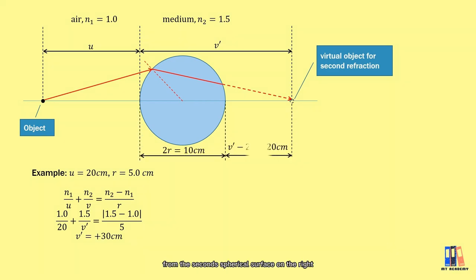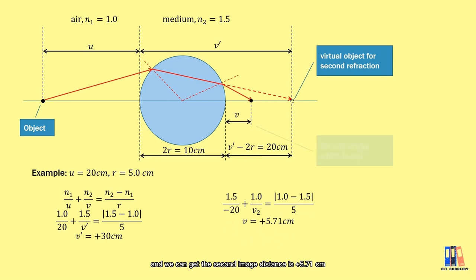Here, we need to recount the object distance from the second spherical surface on the right where we take the 30 cm minus the diameter and then we have the object distance as negative 20 cm. Apply the formula again and we can get the second image distance is equal to positive 5.71 which is a real image.